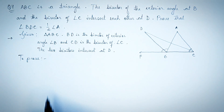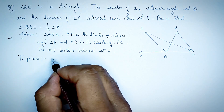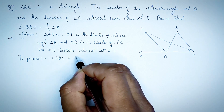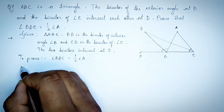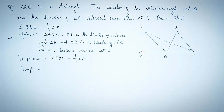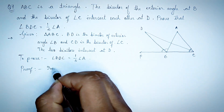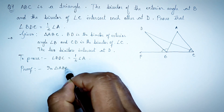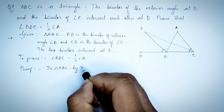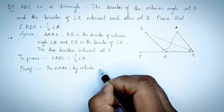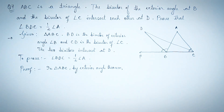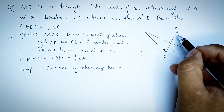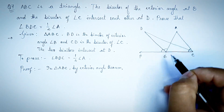In triangle ABC, by the exterior angle theorem, the exterior angle — angle ABP, ABC exterior angle D.